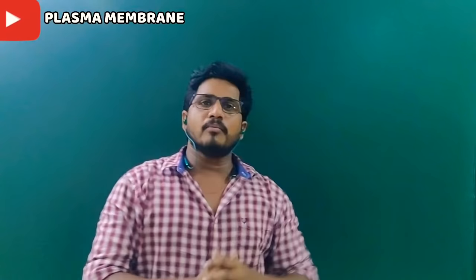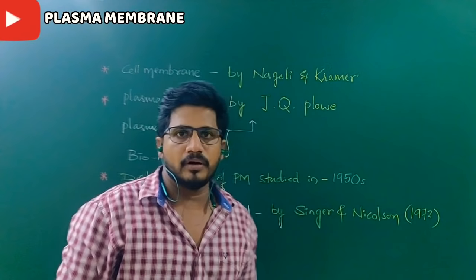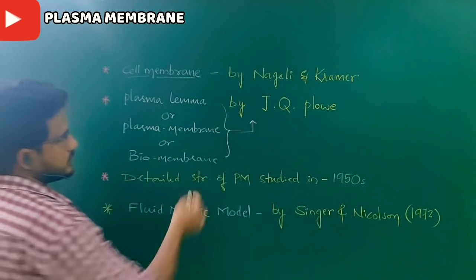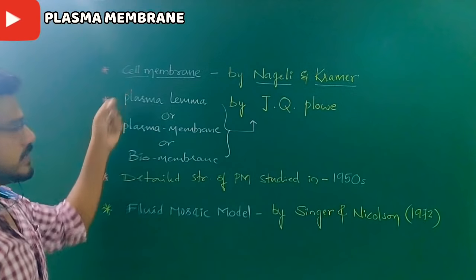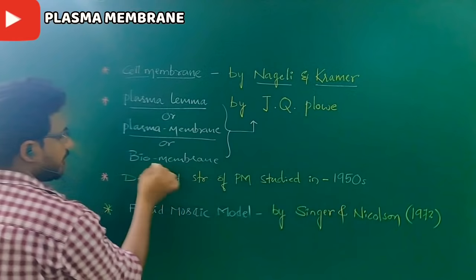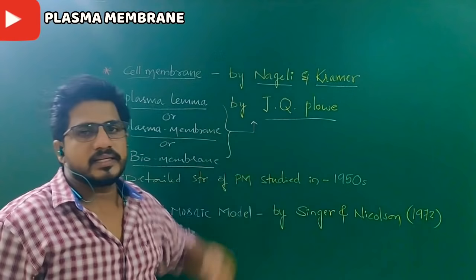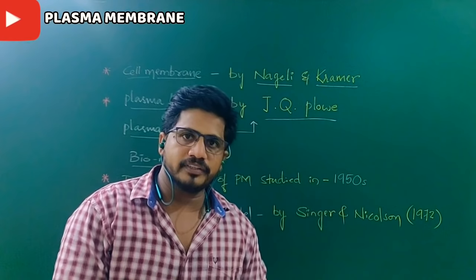So many students have a confusion: are cell membrane, plasma membrane, and biomembrane the same? Obviously, yes. Different scientists worked and gave these names. Negeri and Cranco together said 'cell membrane.' Cell membrane is also called plasmalemma — lemma means layer — and also called plasma membrane or biomembrane. All three are the same, named by J.Q. Plo. These are the two scientists with a historical aspect regarding the naming of the cell membrane.